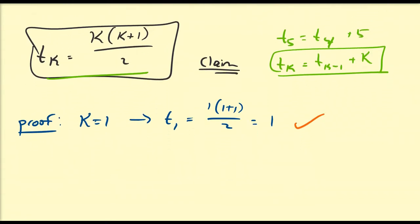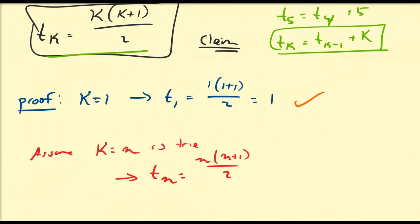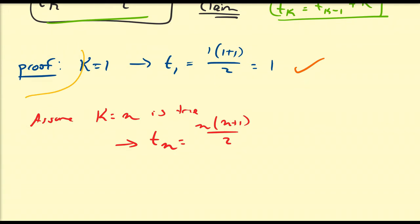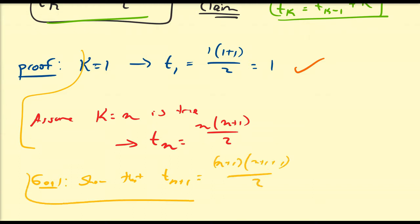Then we assume that k equals n is true — that is, we assume tn equals n times n plus 1 divided by 2. Using this assumption, our goal is to show that t(n+1) equals n plus 1 times n plus 2 over 2.